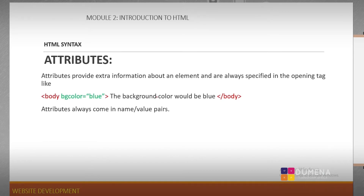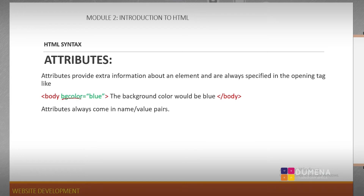Attributes provide extra information about an element and are always specified in the opening tag. For example, we have our body tag — the opening body tag — and this is our attribute. The attribute here says BGColor equal to blue, meaning we are giving a background color to the body of our webpage and the color is blue. Attributes always come in name and value pairs — this is the name and this is the value.